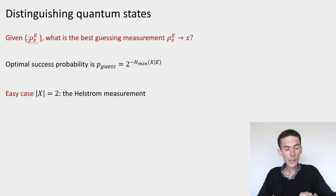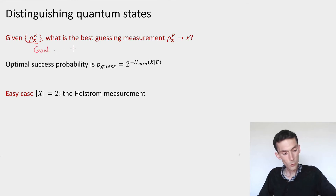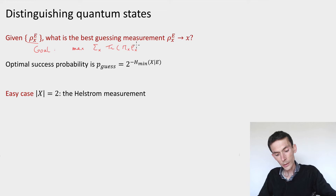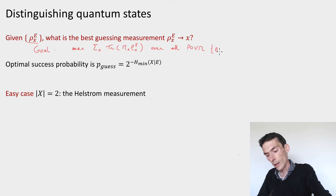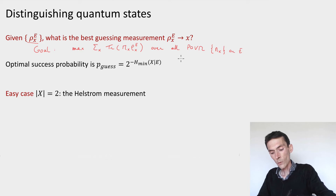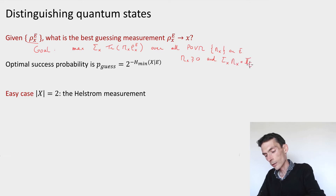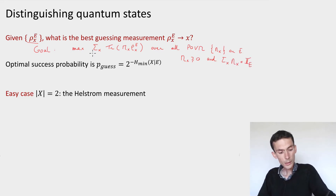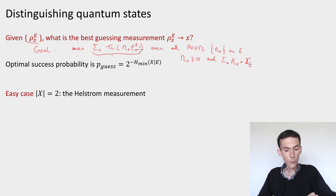It's important to make the figure of merit sufficiently precise. We want to maximize the sum over all possible x of the trace of m_x rho_x, over all POVMs {m_x} on system E. The definition of a POVM is that these operators m_x should be positive semi-definite and should sum to identity on E. This expression is the probability that, given the state rho_x with probability trace of rho_x, the measurement m returns outcome x. We're trying to maximize that probability.